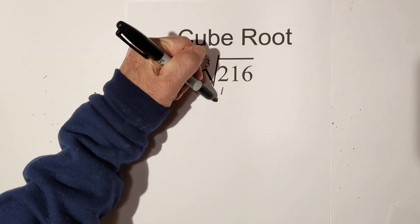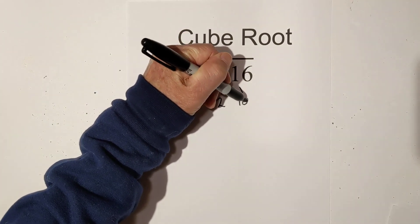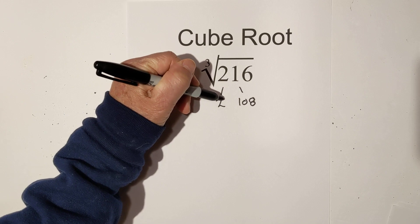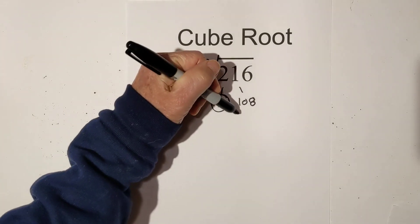So I'm going to start with a factor tree. So we have 2 times 108, that equals 216, now circle the 2 because it is prime.